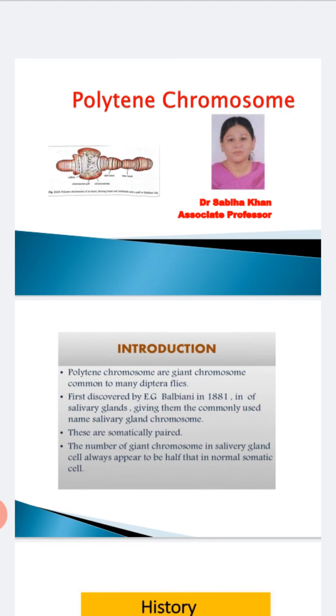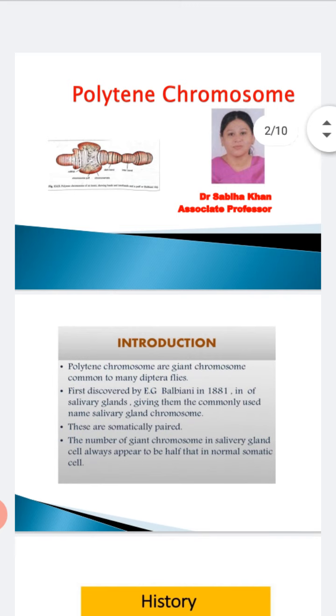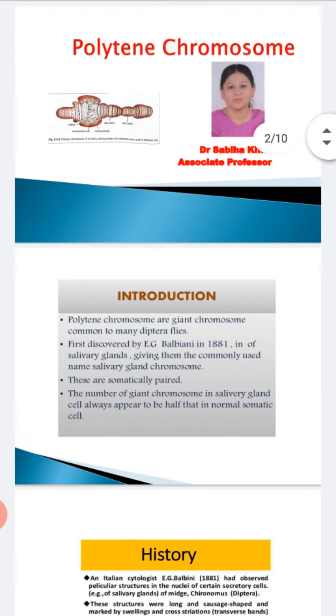Who first discovered them? It was a scientist called Balbiani. In the year 1881, he discovered these salivary gland chromosomes. They are found in the salivary gland, hence the name salivary gland chromosome. Somatically they are paired, and the number of giant chromosomes in salivary gland appear to be half that in the normal somatic cell.